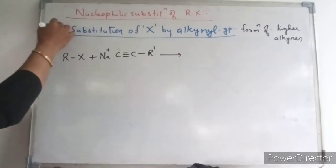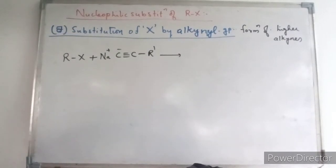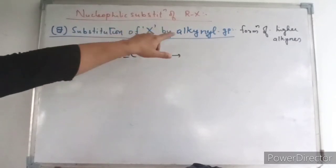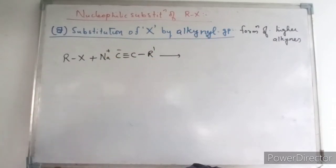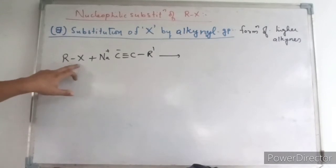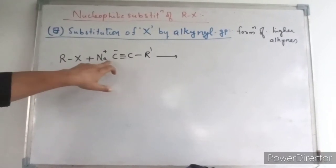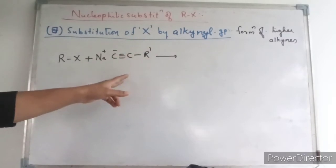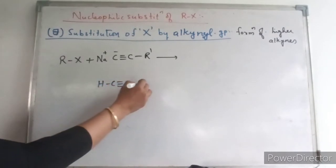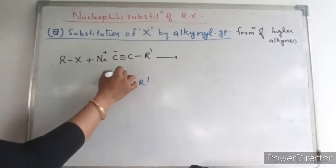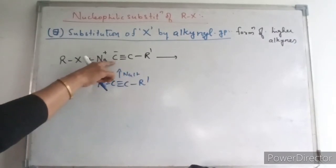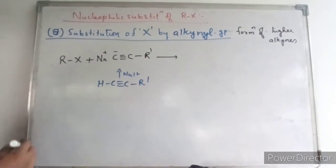The 8th reaction is substitution of halogen by alkynyl group — the group having a C≡C triple bond. In that case you will be getting higher alkynes — higher analogues of alkynes. For that I have taken alkyl halide and sodium acetylide, the sodium salt of an alkynide. Here hydrogen was there previously; this is a terminal alkyne, and if you treat with sodium hydride you will be getting sodium acetylide.